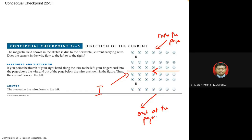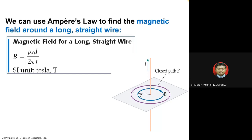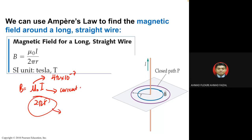Ampere's Law gives the magnetic field along a straight wire as B = μ₀I / 2πr, where μ₀ = 4π × 10⁻⁷. The 2πr term is the circumference — the distance from the wire to a point at radius r.